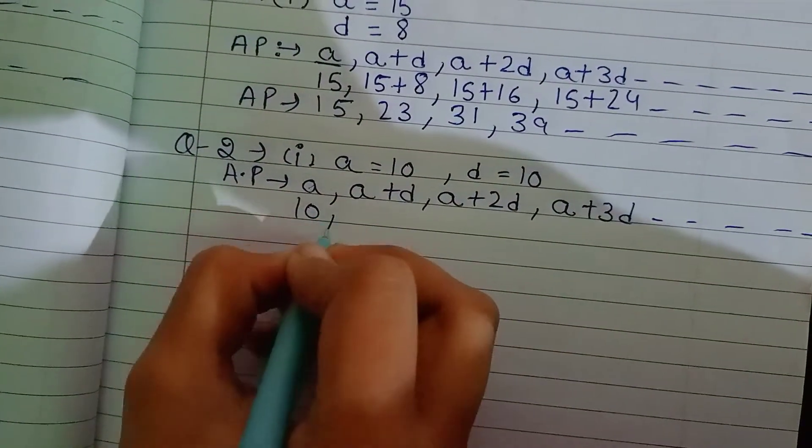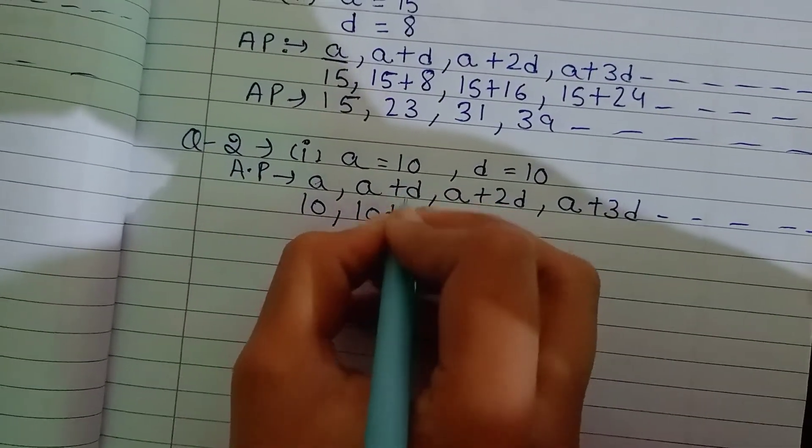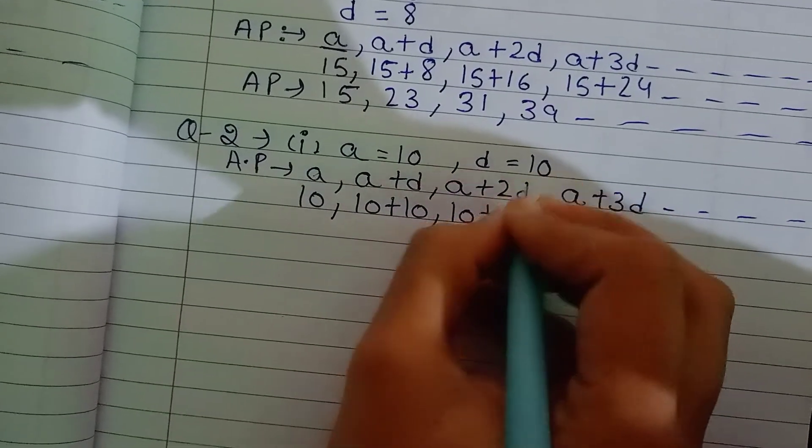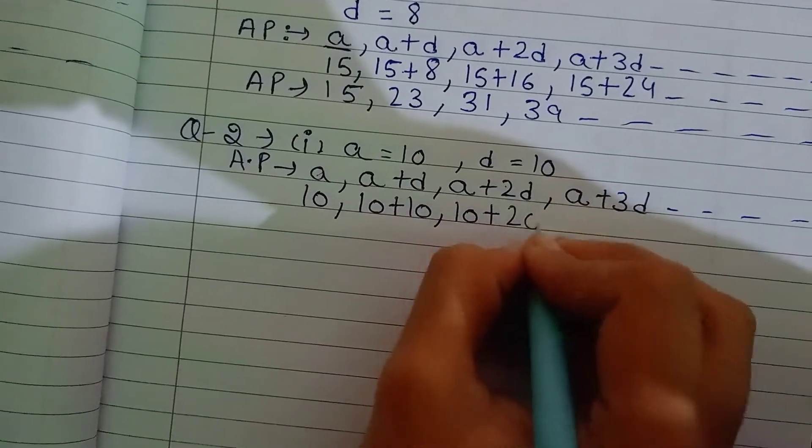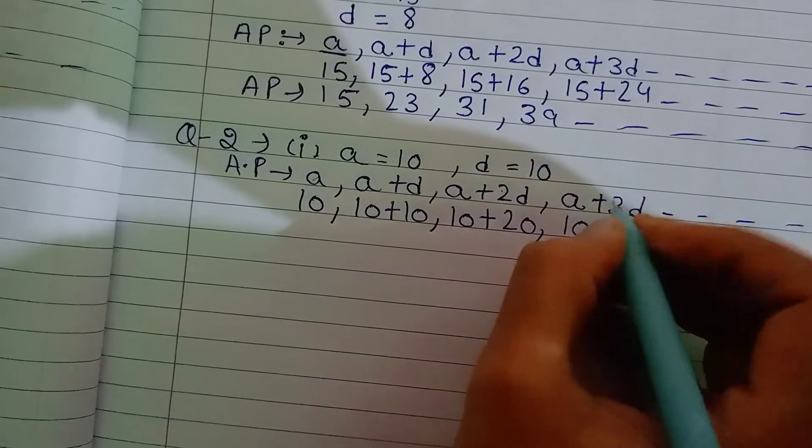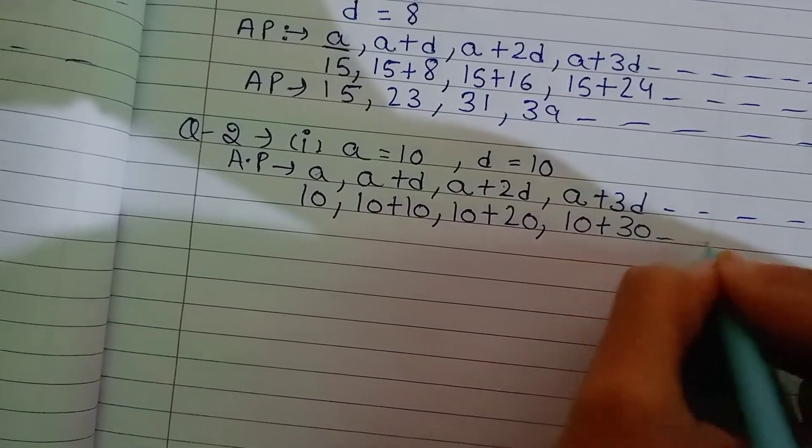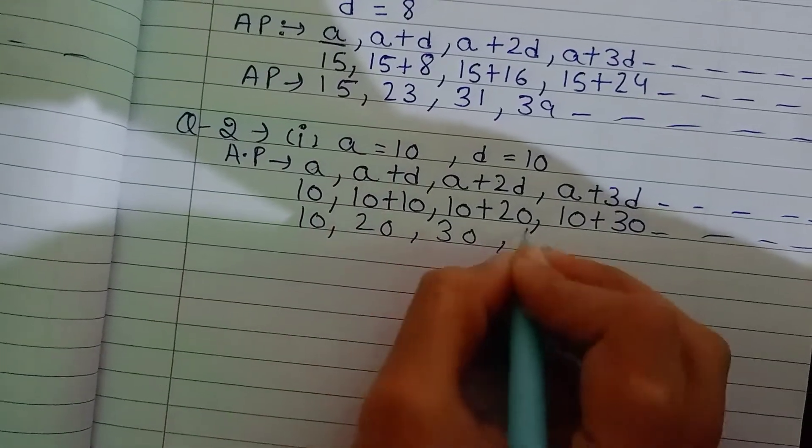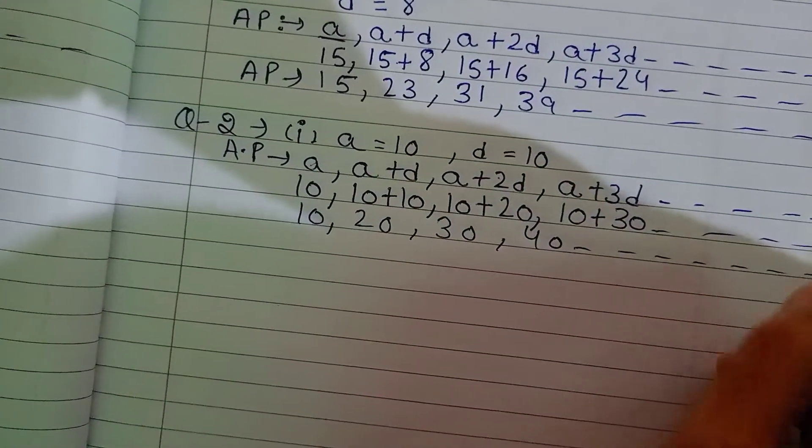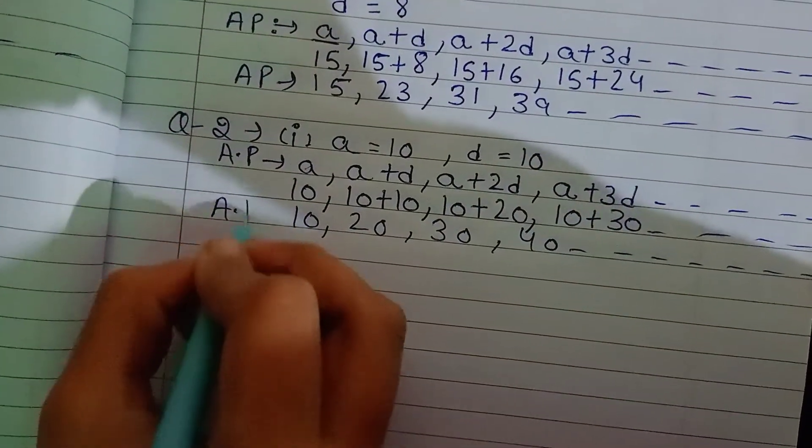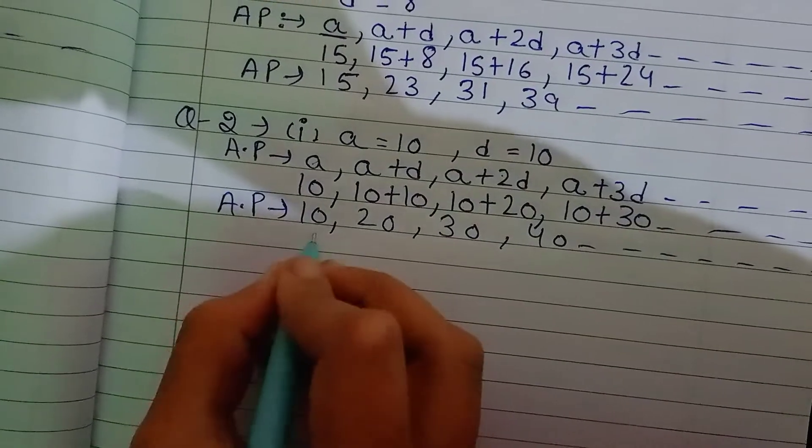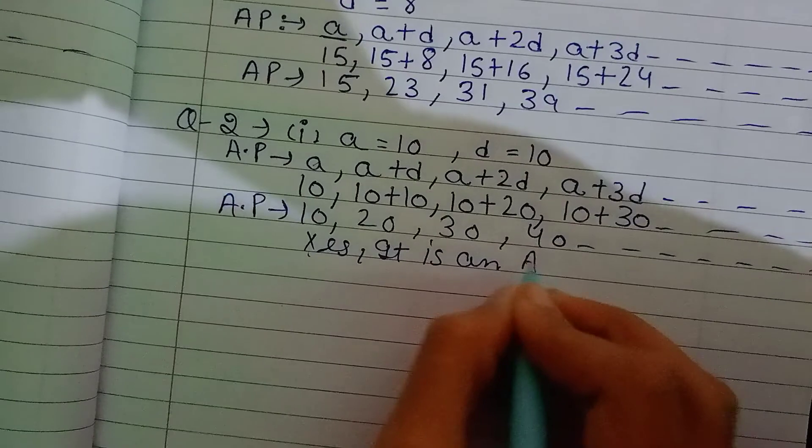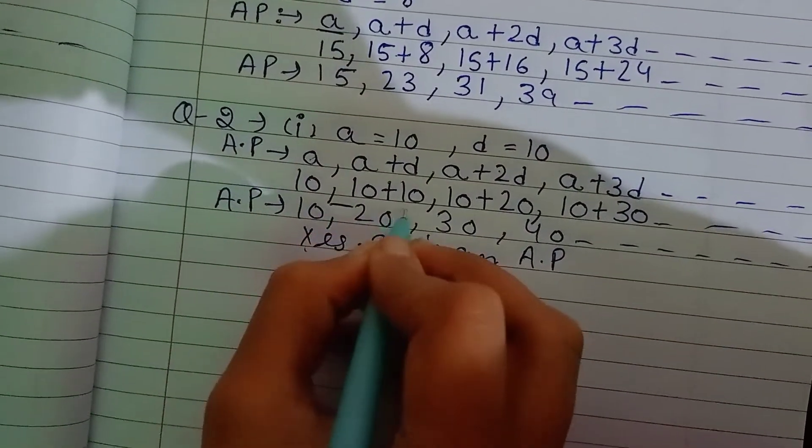A value is 10, d value is 10. So we have 10, 10 plus 10 is 20, 10 plus 20 is 30, 10 plus 30 is 40. The common difference is the same, so yes, this is an AP and we can also call it a sequence.